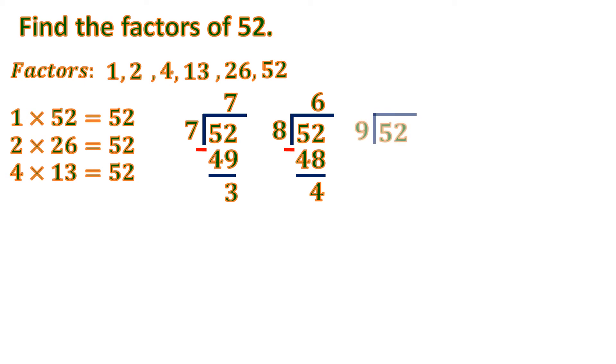Then we'll continue with 9. So 52 divided by 9 is 5. 5 times 9 is 45. Then subtract. The difference is 7. So there's a remainder of 7. So 9 is not a factor of 52.